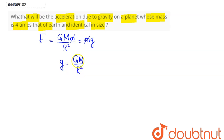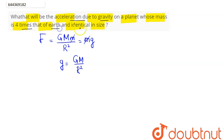The acceleration due to gravity comes out as g = GM divided by R squared, where G is the universal gravitational constant, M is the mass of the planet, and R is the radius of the planet. Now the question asks: what will be the acceleration due to gravity on a planet whose...